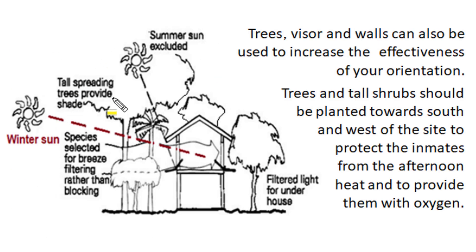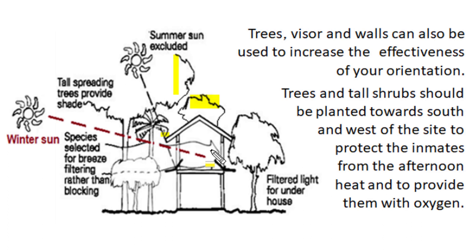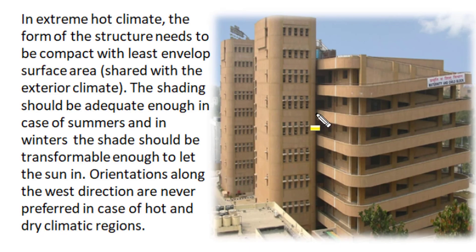So orientation of a building needs good fenestration on southern façades with appropriate shading to restrict summer sun radiation. In summer, the roof or sheds take the brunt of the sun, and in winter solar radiation directly enters the residential area. Nearby tall structures, tall trees, roof visor extensions, and walls can be used to increase the effectiveness of building orientation. Tall trees or shrubs to the south or west side of the building protect the internal environment from summer heat.